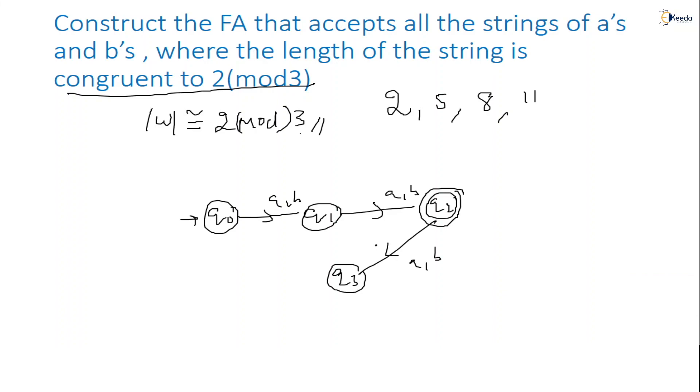Now I think this is length 1 rejected, length 2 accept, length 3 reject, length 4 reject, length 5 should accept. I think this state is not required. Simply what I will do, just I will make this connection. You can check it A comma B.